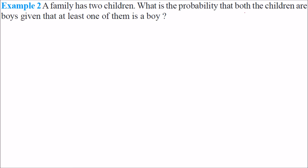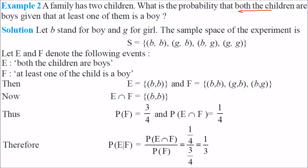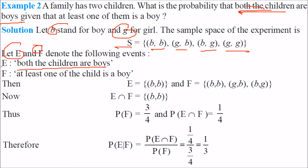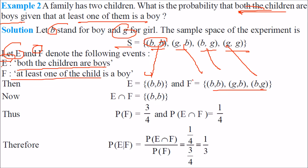A family has 2 children. What is the probability that both children are boys given that at least one of them is a boy? First, construct the sample space. If B stands for boy and G for girl, the sample space is {BB, GB, BG, GG}. Let E be the event that both children are boys, and F be the event that at least one child is a boy.